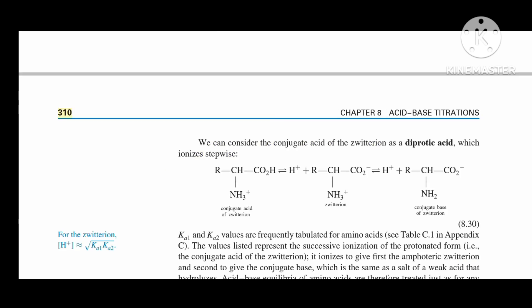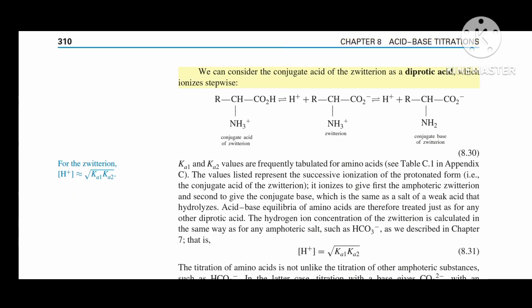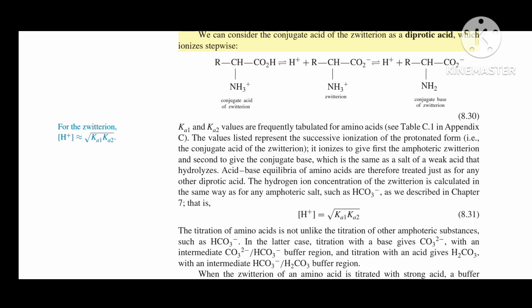Chapter 8, Acid-Base Titrations. We can consider the conjugate acid of the zwitterion as a diprotic acid, which ionizes stepwise: R-CH-CO2H H+ NH3+ (conjugate acid of zwitterion).